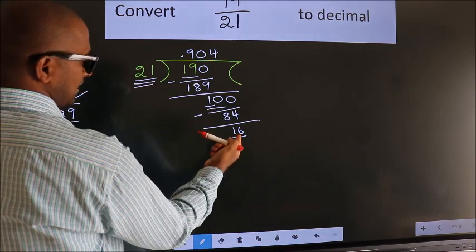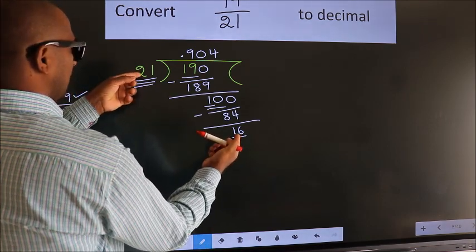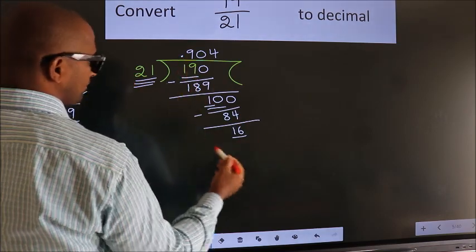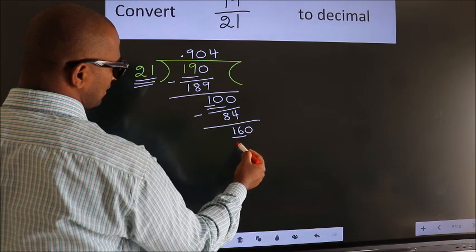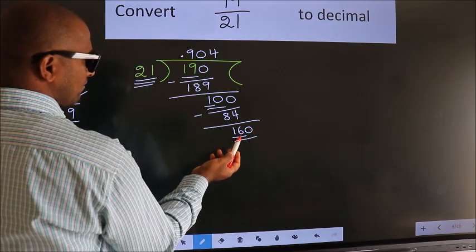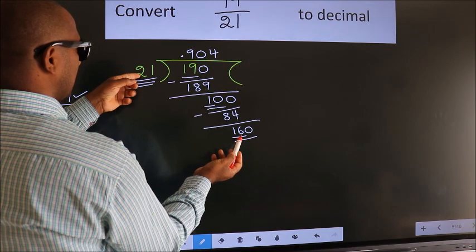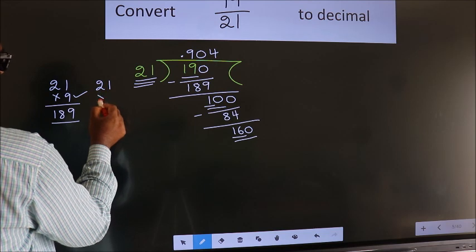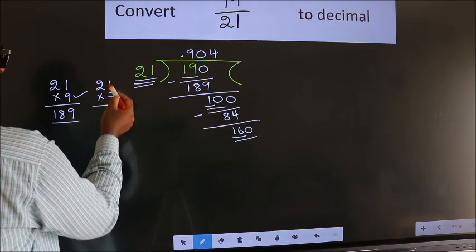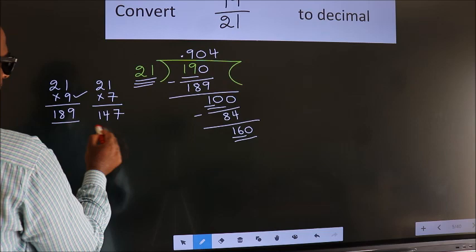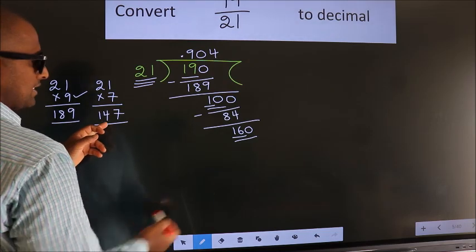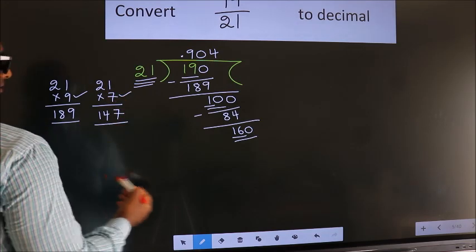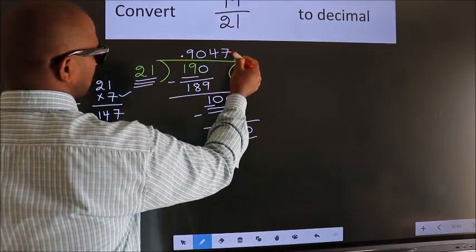We already have the decimal, so we can directly take 0, giving us 160. A number close to 160 in the 21 table — we go with 7. So 21 × 7: 7 ones are 7, 7 twos are 14 → 147, which is close to 160. So we go with 7, meaning 21 × 7.